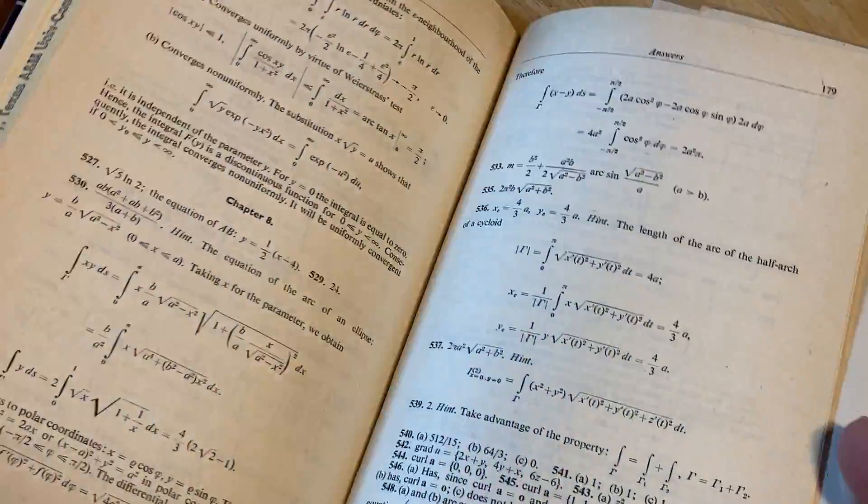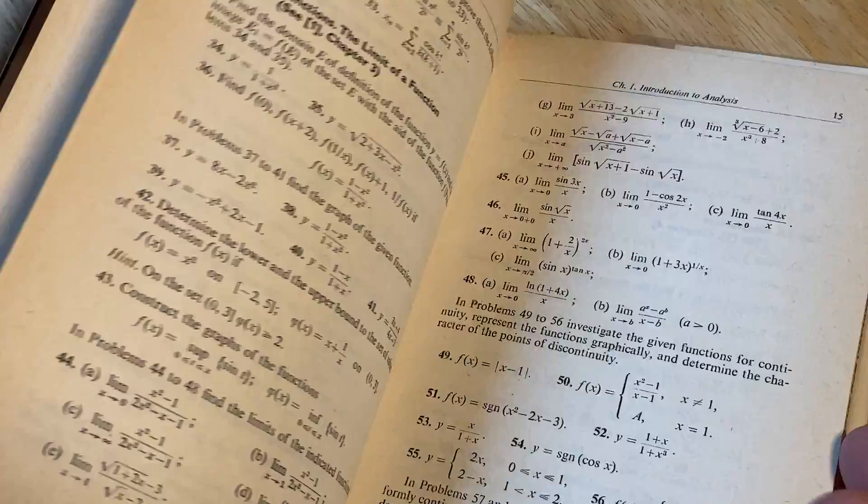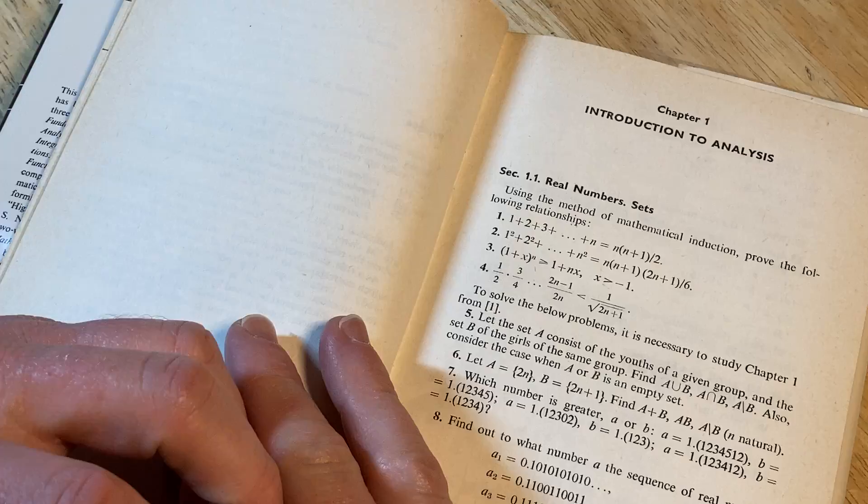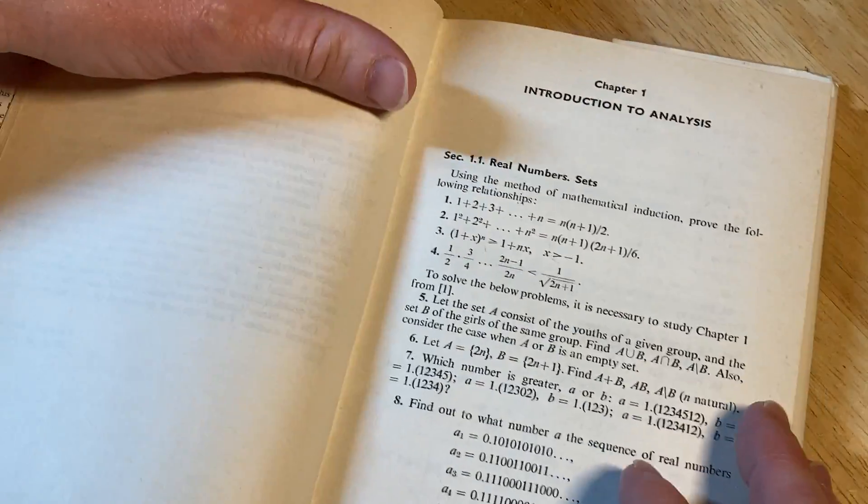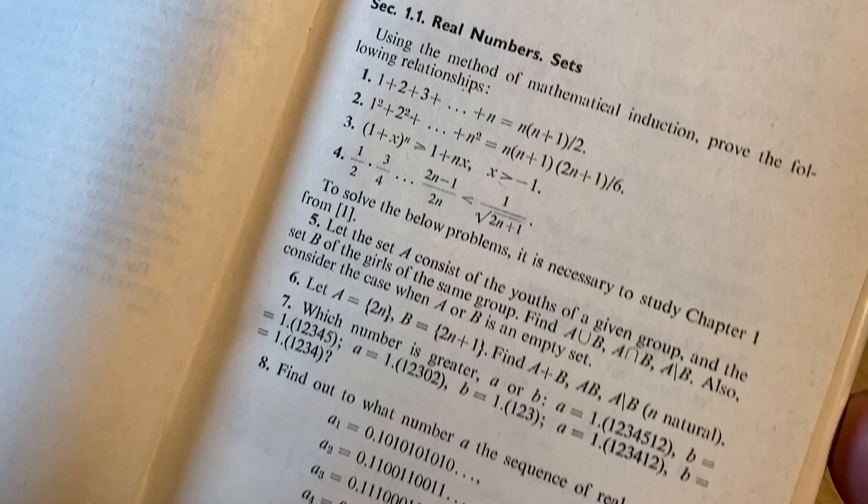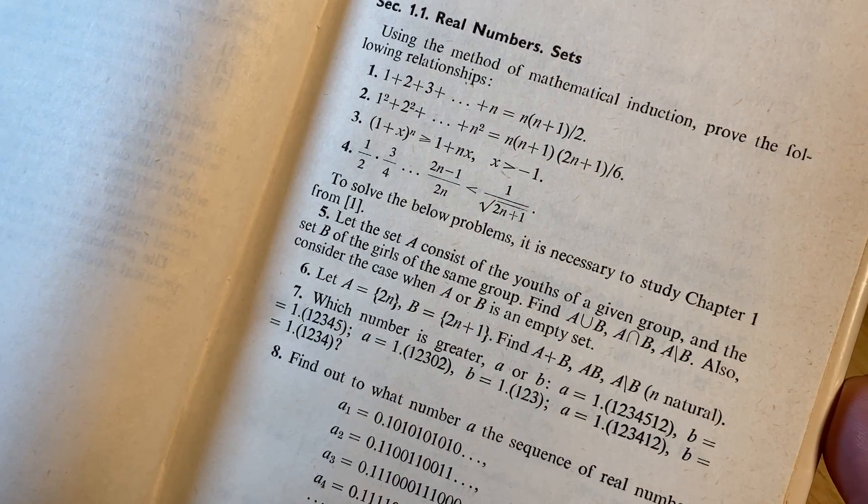Wow. I just got to smell it again. Ah, amazing. Let's go to the beginning of the book so we can see how it starts. Real numbers and sets. Using the method of mathematical induction prove the following. So you start off with some induction proofs.